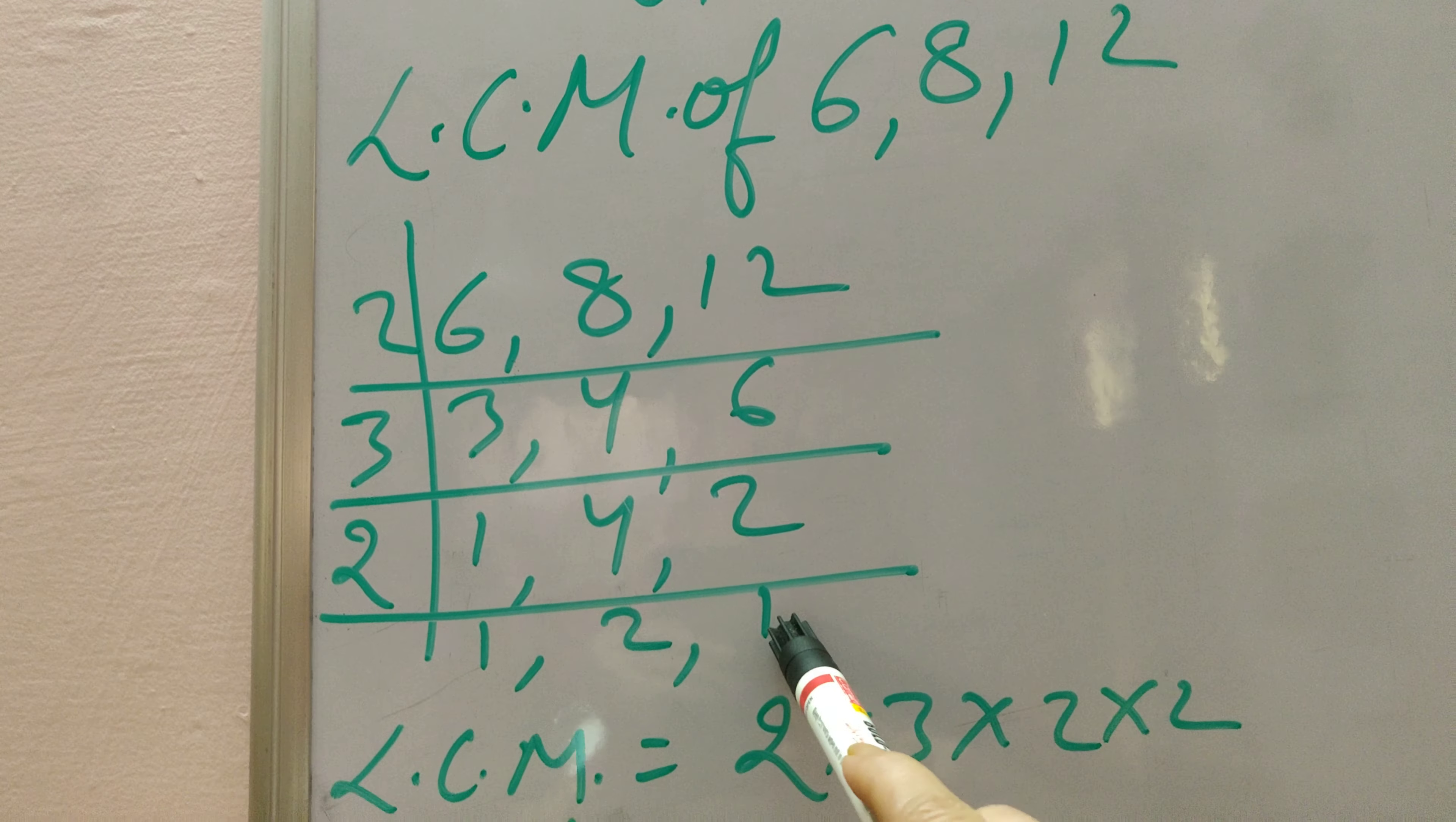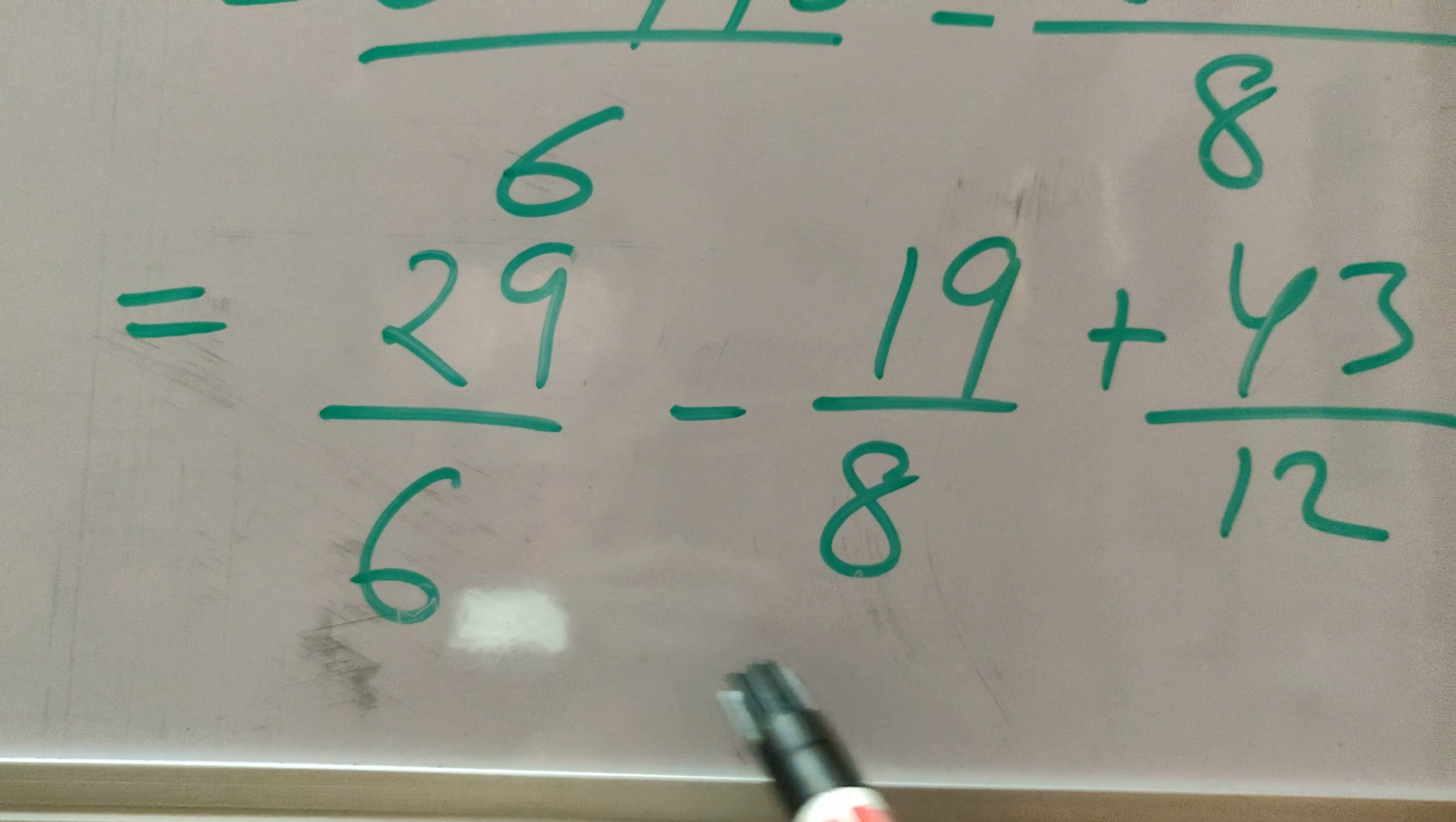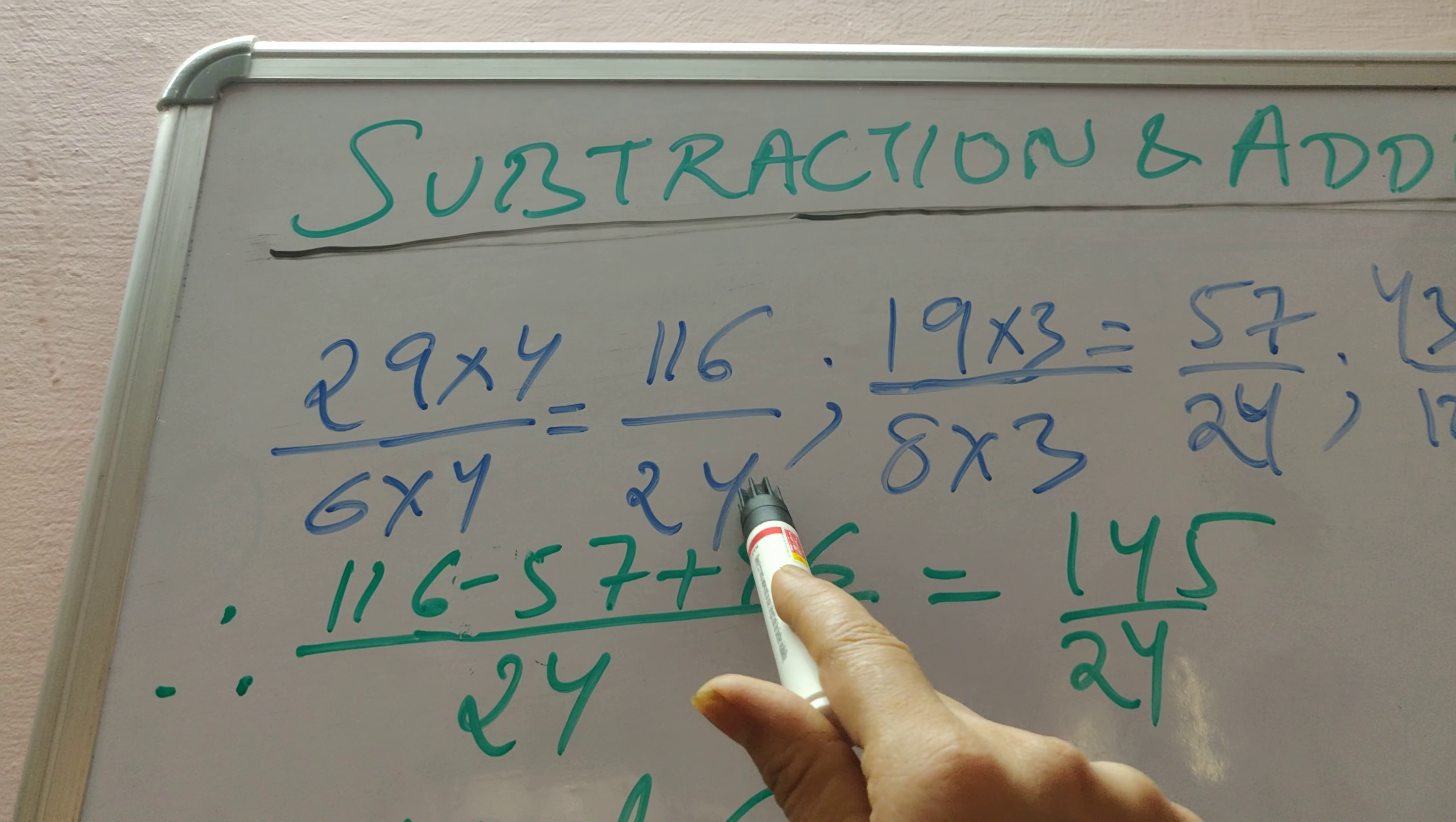So now I can convert my these fractions. I can convert into fractions of this form with common denominators by using this method which we have already done for addition. So 29 times 4 by 6 times 4 will be 116/24.